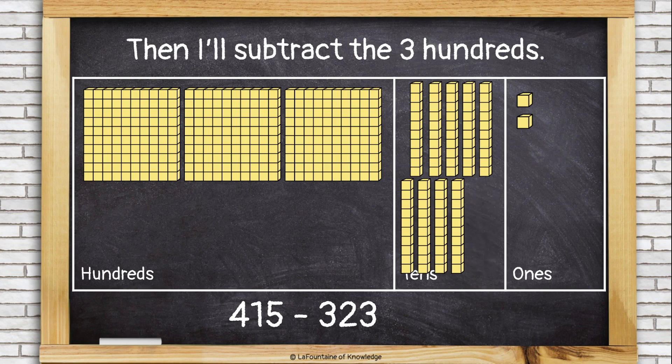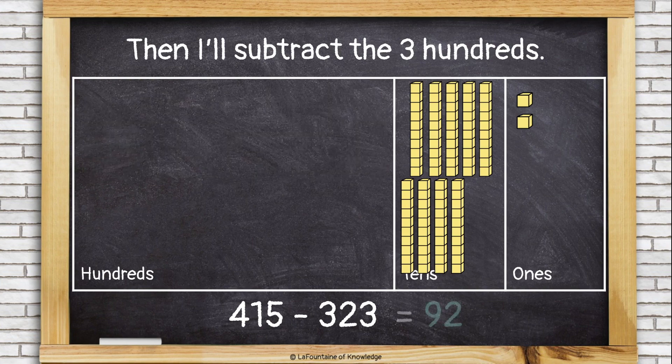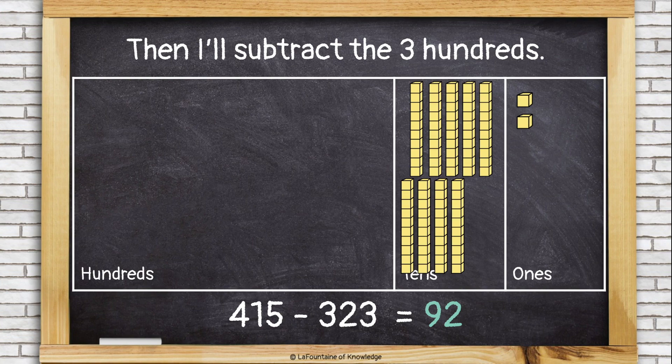And then I just need to subtract 3 hundreds. Gone. Whatever's left is my answer. I have 9 tens and 2 ones, or 92.